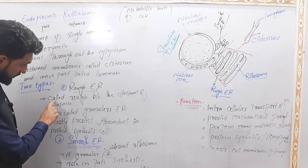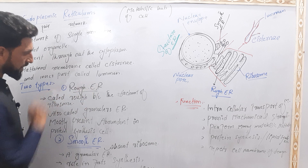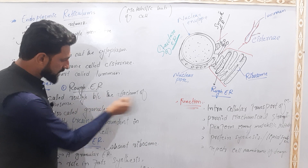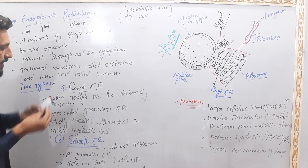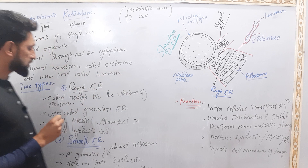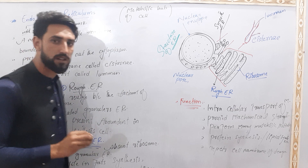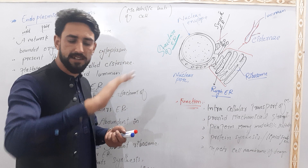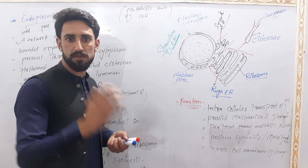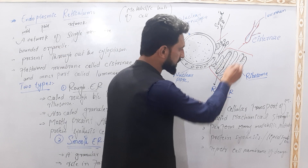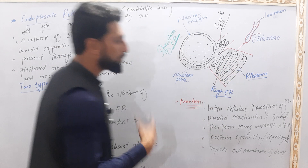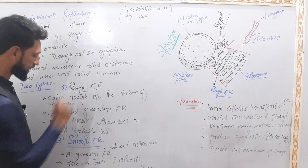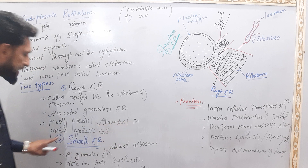The rough endoplasmic reticulum gets its name because of the attachment of ribosomes. It is also known as granular endoplasmic reticulum — granular means it has granules, which are the ribosomes, making it appear rough. So rough and granular refer to the same structure.